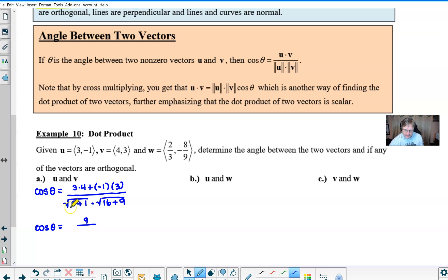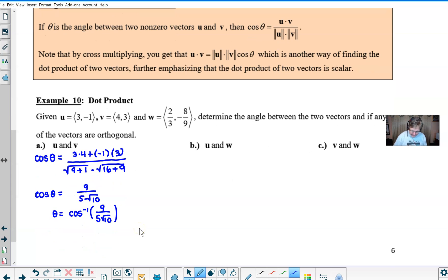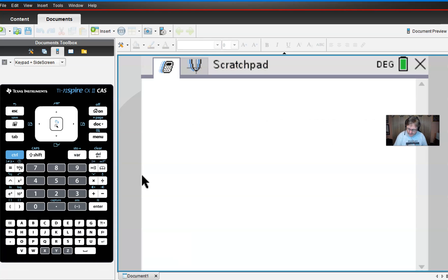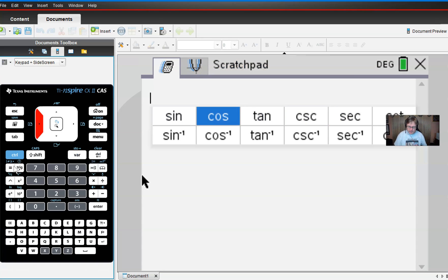And so then we simplify this to obtain the cosine of theta being 12 minus 3 gives us a 9 in the numerator. The denominator is going to consist of a square root of 10, and then the square root of 25 is really just a 5. So 9 divided by 5 square root of 10, if we were to take its inverse cosine, would give us our angle measure. And so at this point, we are going to have to move over to a calculator. So I'm going to use my TI-Inspire. Any calculator that will compute an inverse cosine will do the job here.